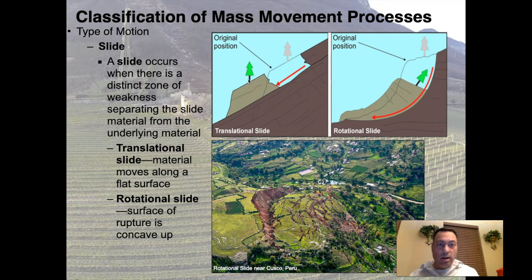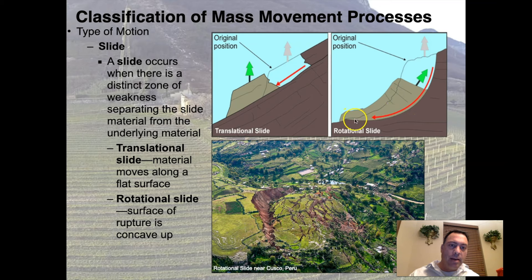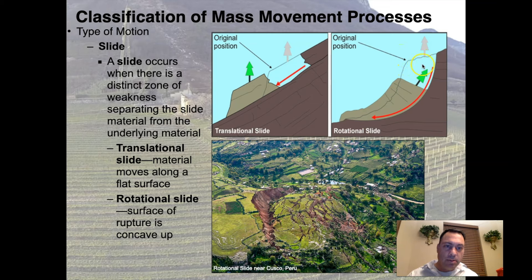In a translational slide the tree doesn't even know it's moved — the rock moved and the tree went along with it. In a rotational slide there's a curvature; the surface rupture is concave upward — it goes into the ground at the head and comes out at the toe. This is called a rotational slide. Here's a giant example in Peru: it's dropped down at the top, and down below there's a toe coming out somewhere else.